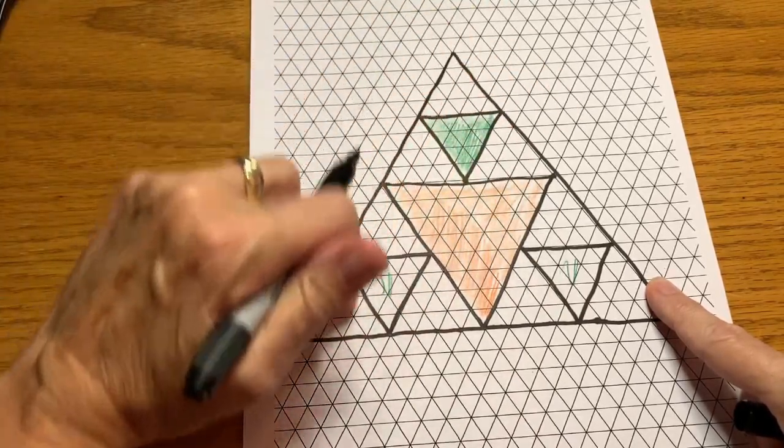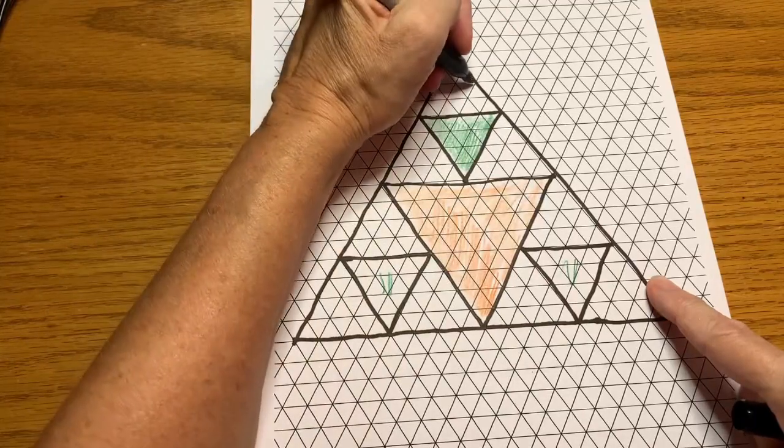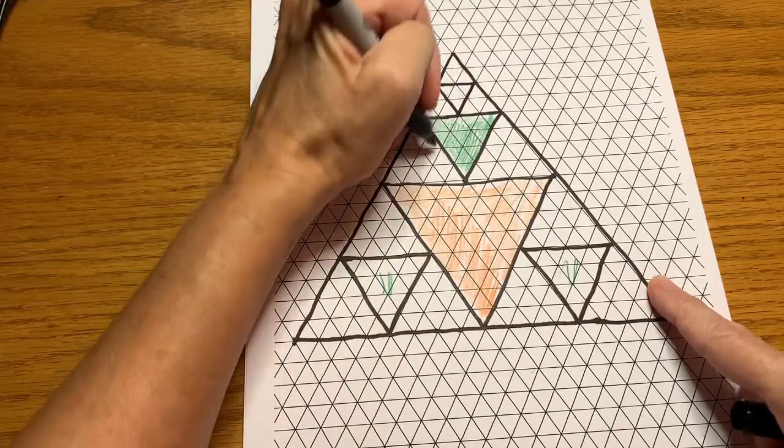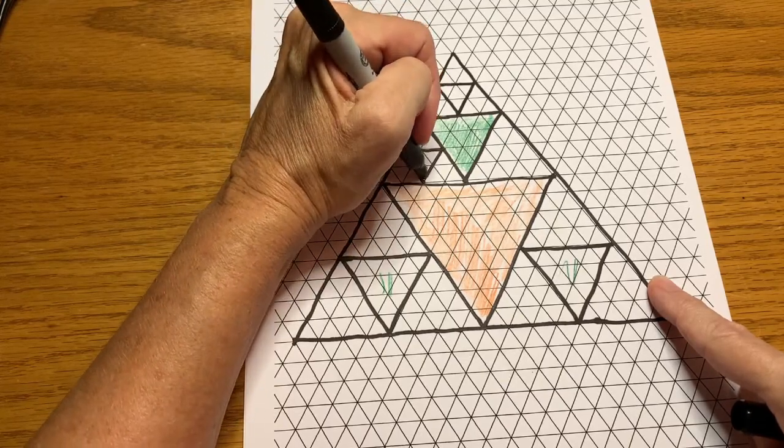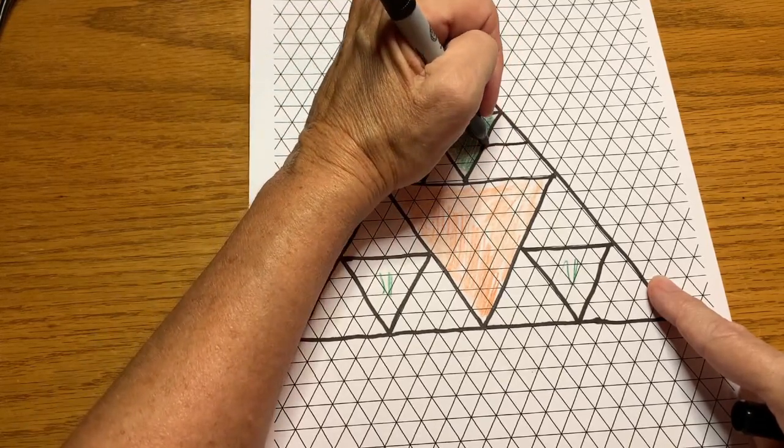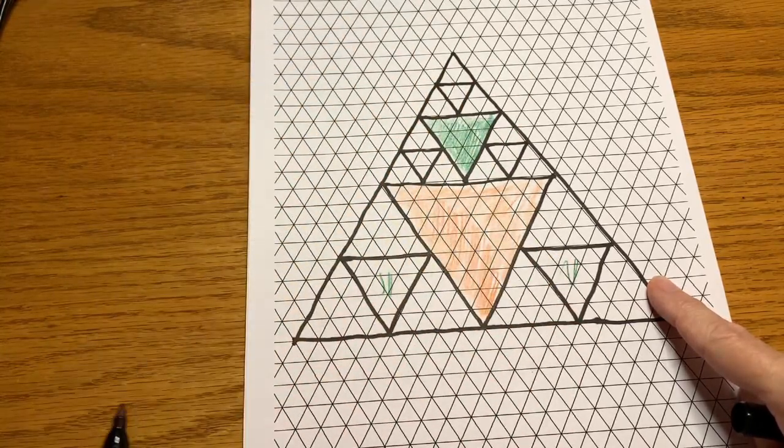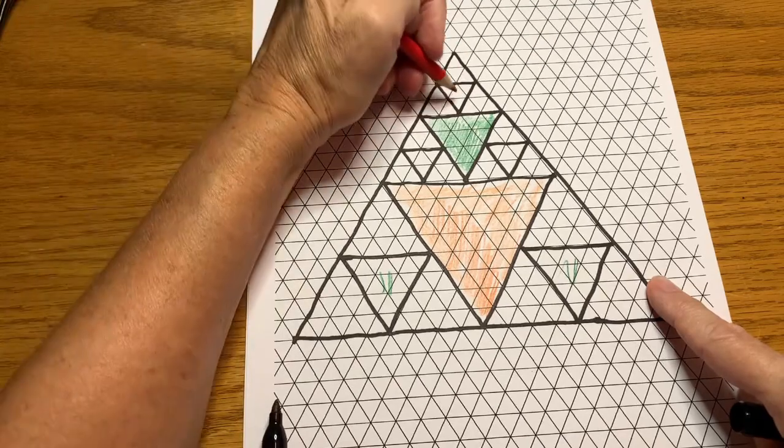Then in these empty spaces, which we have nine of them now, we'll do a 2 by 2 triangle. And I do the same down here. Color those in a different color.